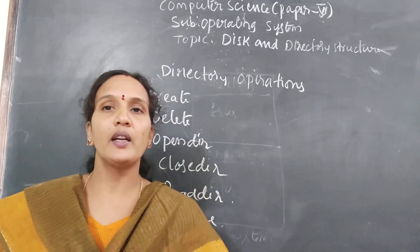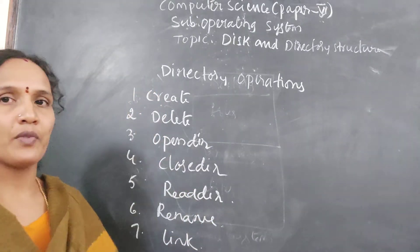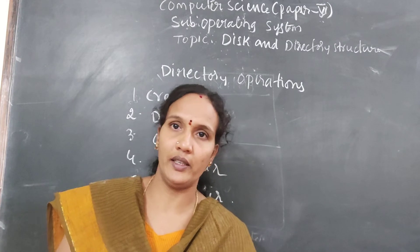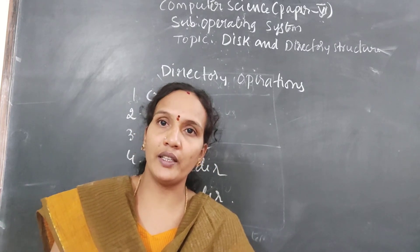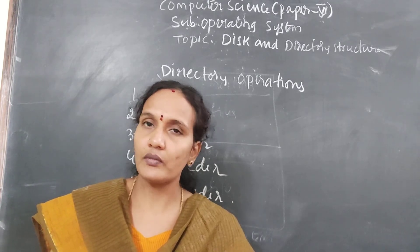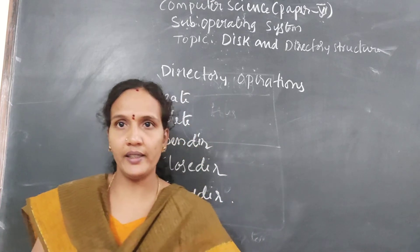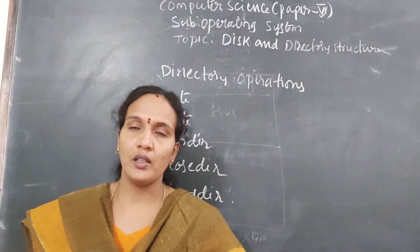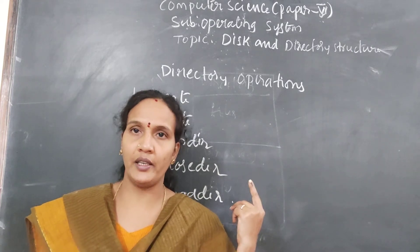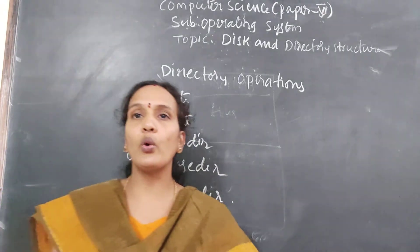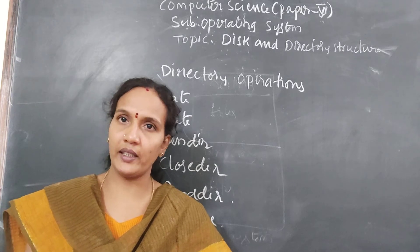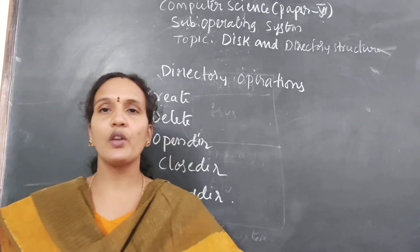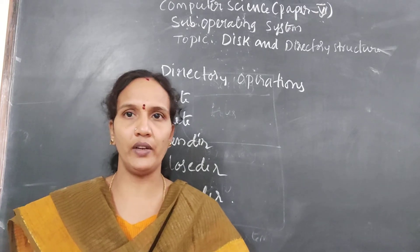Every operation is nothing but a system call. Using a system call you can perform different operations on a file. First is Create — using a create system call you can create a directory. By default, when you create a directory it is an empty directory. Next is Delete — if you want to delete a directory, all the files should be deleted first. Only an empty directory can be deleted. If the directory contains files and you want to delete it, it is not possible. First make the directory empty, then delete it.